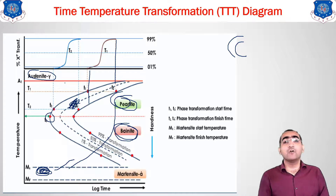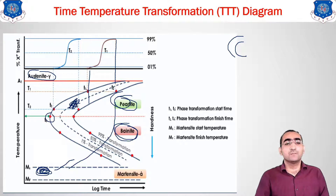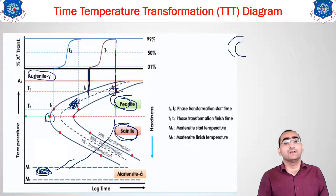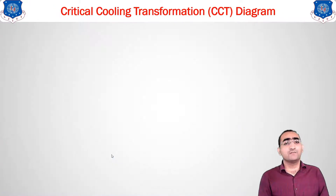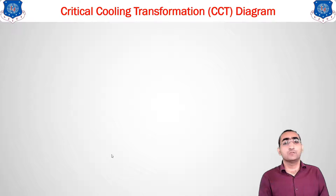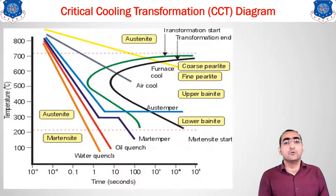So that is how the time-temperature transformation diagram is constructed. Now let us proceed to our next diagram — the CCT diagram, which stands for Critical Cooling Transformation diagram. You must understand the TTT diagram first, and then we can plot the CCT diagram.